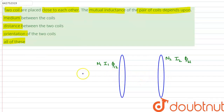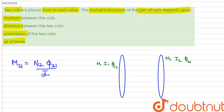The mutual inductance between the coils is given by the formula M21 = N2·φ21 / i1, where i1 is the current flowing through coil 1 and φ21 is the linked flux to coil 2 due to coil 1.